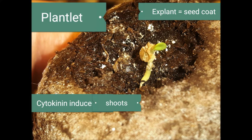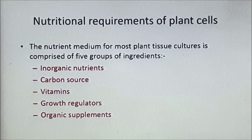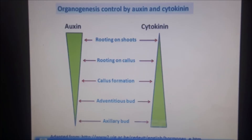Then I had to change the medium and put more cytokinins in to produce the plantlet, and then it went fine. Here are the five requirements for a plant cell: inorganic nutrients, carbon source, vitamins, growth regulator, and organic supplements — that's what you need for plant cells.